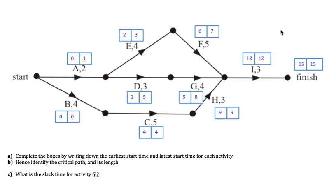We've now completed part A, filling in all the boxes with earliest and latest start times for each activity. We're now looking to identify the critical path and work out its length. Activities on the critical path by definition have no slack time — their earliest start time equals their latest start time. The path containing activities where these match is clearly B, C, H, and I. So that is the critical path.